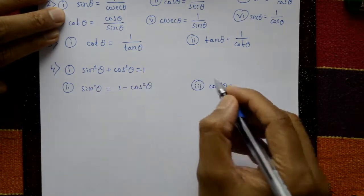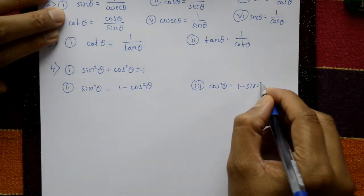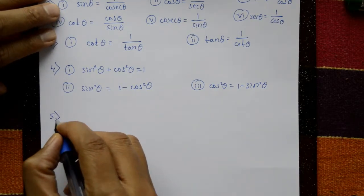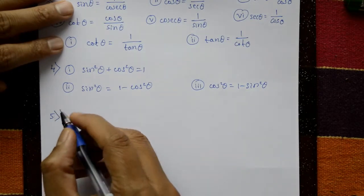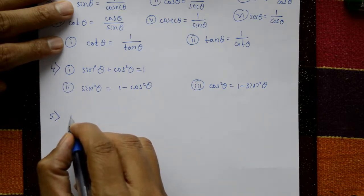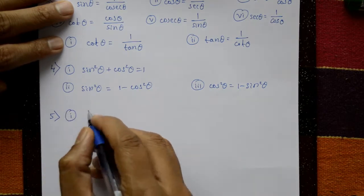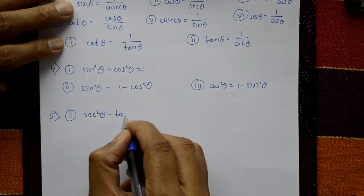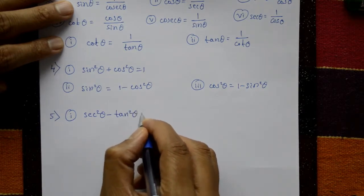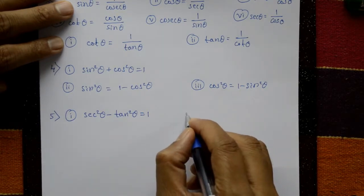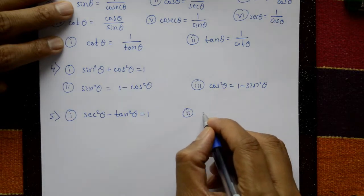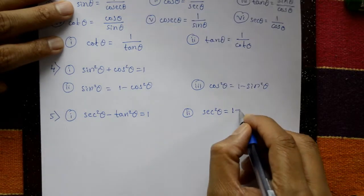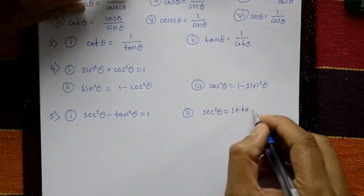Third: cos square theta is equal to one minus sin square theta. Next identity: secant square theta minus tan square theta is equal to one. And secant square theta is equal to one plus tan square theta.